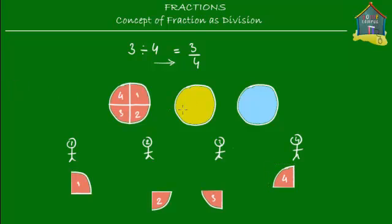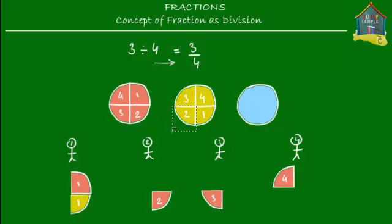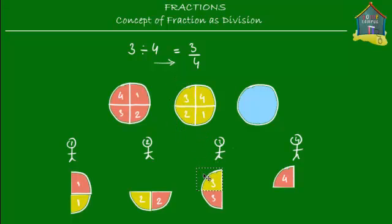The first pizza has been divided. Now let's do the same with the second one — let's divide the yellow pizza among the 4 friends. We cut it up again into 4 slices: give this one to friend number 1, this to friend number 2, this to friend number 3, and this to friend number 4. So I'm dividing each of these pizzas among the 4 friends.